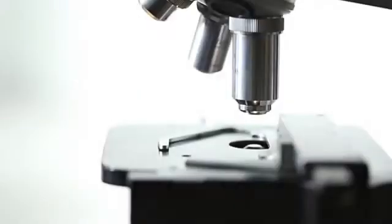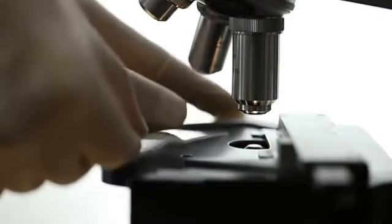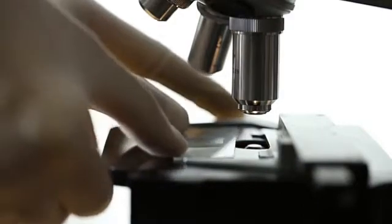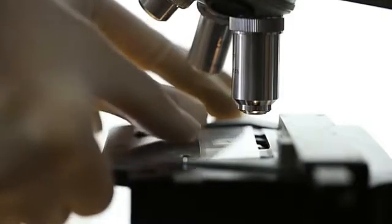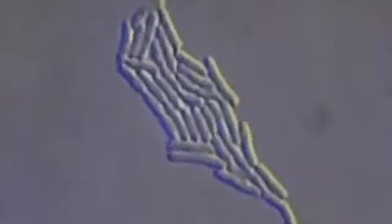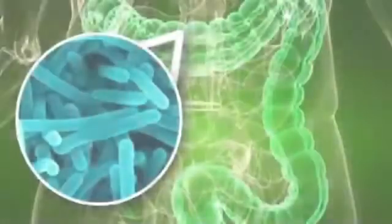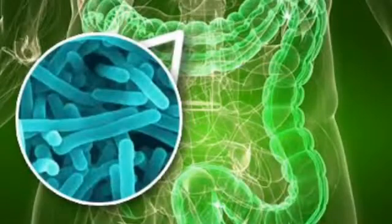Bacteria and viruses are too tiny to be seen by the naked eye, can cause similar symptoms, and are often spread in the same way — but that's where the similarities end. The bacterium is a single but complex cell; it can survive on its own inside or outside the body. Most bacteria are not harmful — in fact, we have many bacteria on and inside our body, especially in the gut, to help digest food.